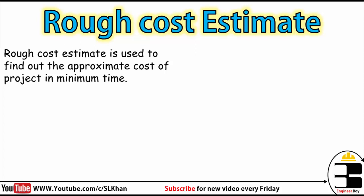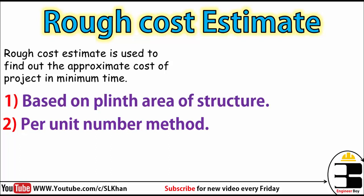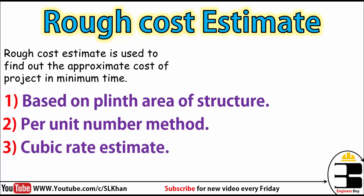How exactly do we do the rough cost estimate? There are a few methods: the per unit number method, based on length/area of structure, based on cubic rate estimate, and others. These methods can all be used to do the rough cost estimate of any project. Let's select the one method used most by quantity surveyors in daily projects.